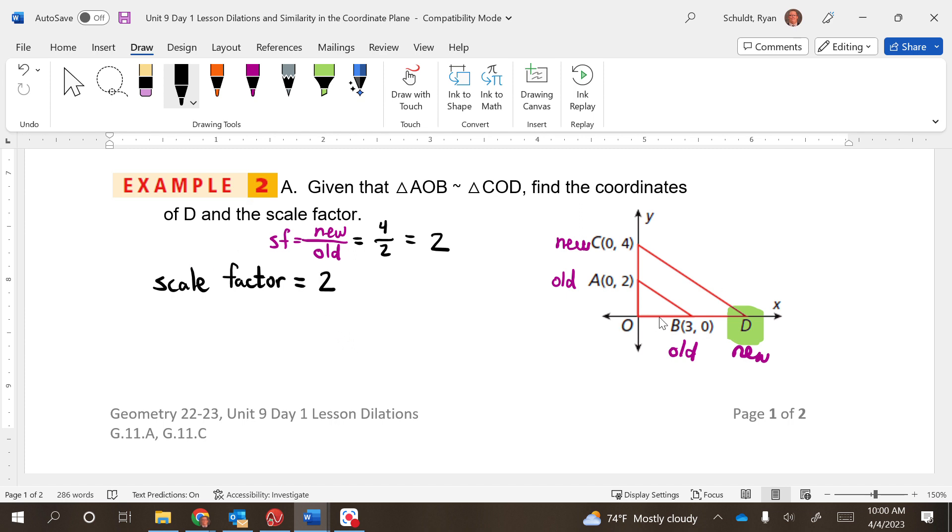I need to multiply these points here by 2. (3, 0) is my original, I need to multiply it by 2. Times 2, 3 times 2 is 6, 0 times 2 is 0. That means D is going to be at (6, 0). There we go.